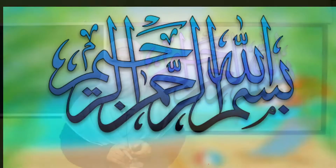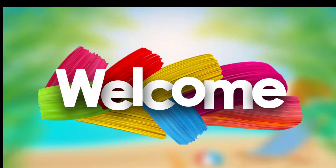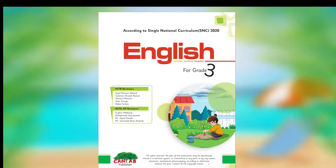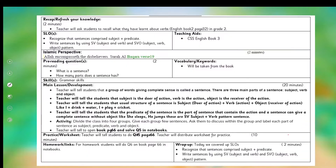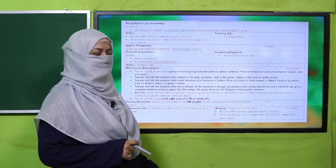Bismillahirrahmanirrahim, assalamu alaikum, my dear students. How are you? I hope you are enjoying the best of health. I welcome you in my class, English for Correct Free. We are learning Unit 12, its title is Eid ul Adha. Fellow teachers, this lesson plan, PowerPoint presentation, and worksheet links are given. You may click it, download it, and follow it as is or modify for your convenience.